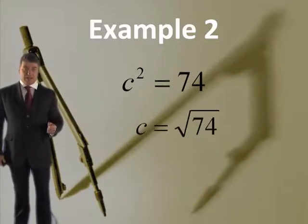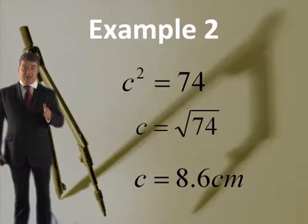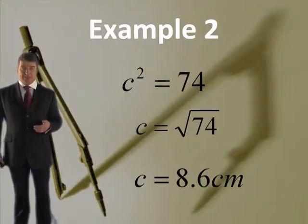You square root it. C is the square root of 74. That length there is 8.6 centimetres.